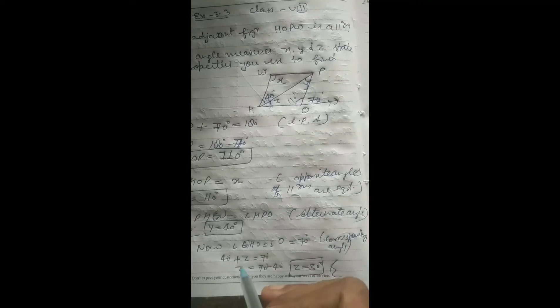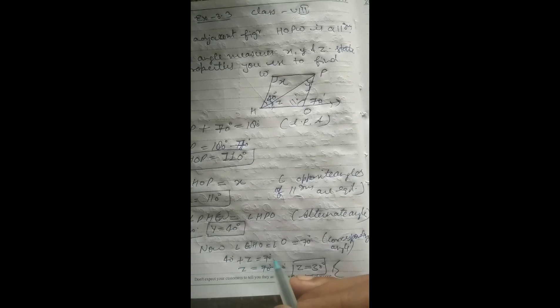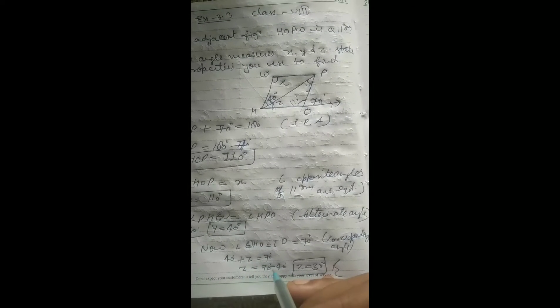So 40 plus z equals 70 degrees. Therefore 40 degrees plus z equals 70 degrees, z equals 70 degrees minus 40 degrees, z equals 30 degrees.